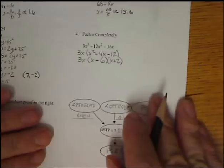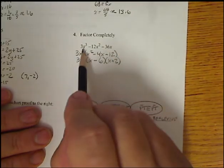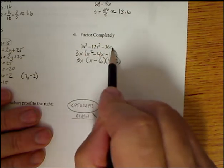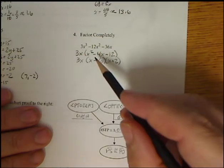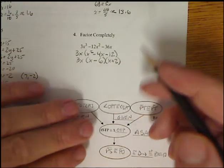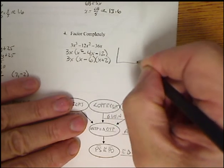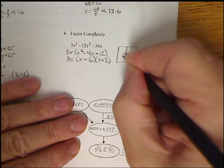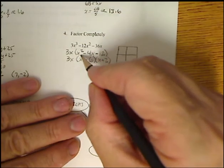For our factoring, your first step is to see what's in common. I have 3 that'll go into all those terms. x goes into all of them. So I factor out the 3x. That leaves me with x squared minus 6x minus 4x minus 12. And then, if you need to use a box method, we have a couple different ways you can actually work through it.